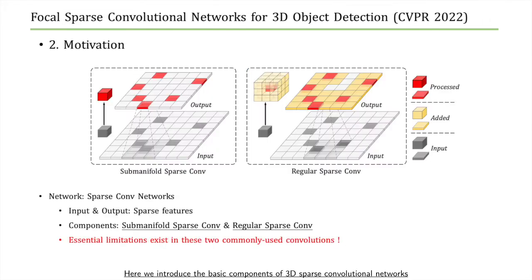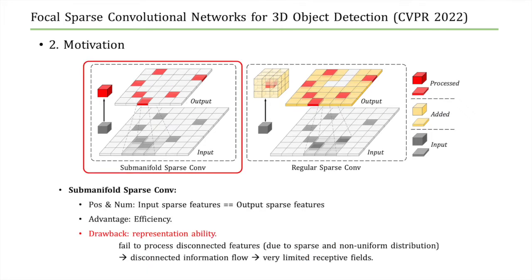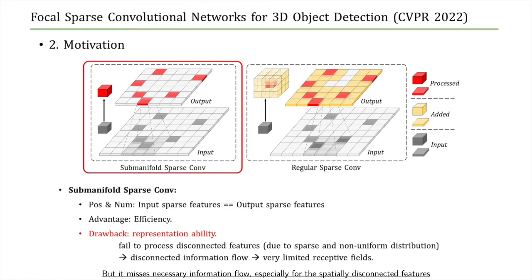Here we introduce the basic components of 3D sparse convolutional networks. The input and output are both sparse features. There are two kinds of convolutions: submanifold sparse convolution and regular sparse convolution. However, essential limitations exist in these two commonly used convolutions. Submanifold sparse convolutions avoid computation issues by restricting output feature positions to the input — its advantage is efficiency, but it misses necessary information flow, especially for spatially disconnected features, leading to very limited receptive fields.